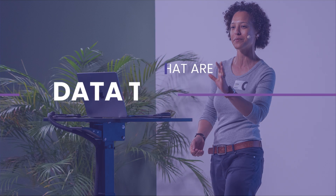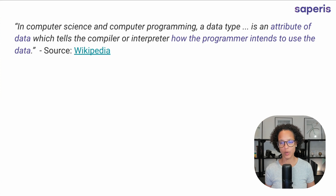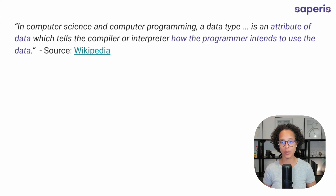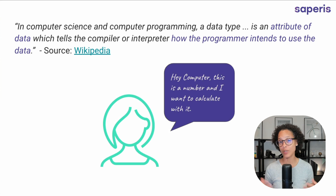What are data types? In computer science, or in programming, a data type is an attribute of data which tells the compiler or interpreter how the programmer intends to use the data. It's kind of like telling the computer, hey computer, this is a number and from now on I want to calculate with it.